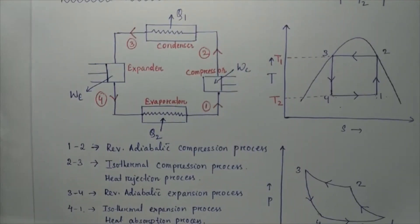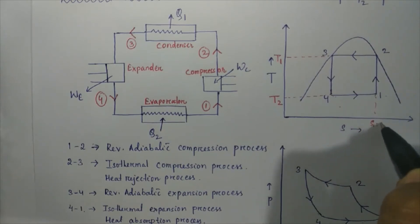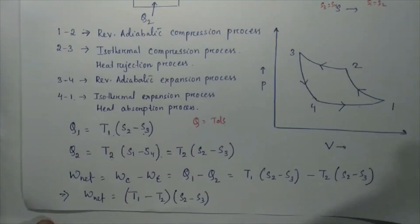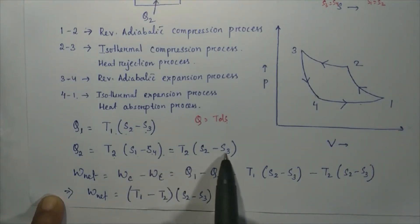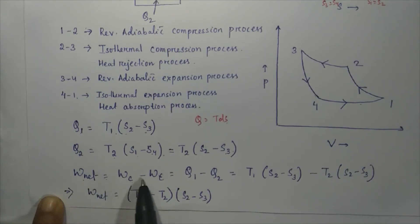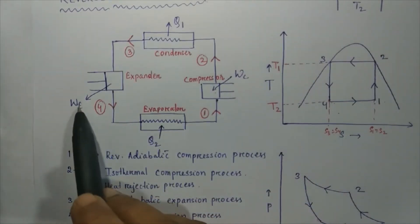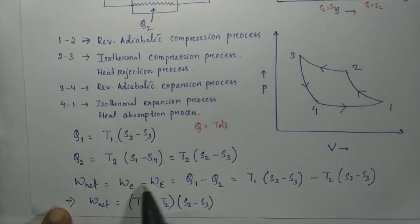Similarly, Q2 = T2 × (S1 − S4). Since processes 1 to 2 and 3 to 4 are reversible adiabatic, entropy is constant, so S1 = S2 and S3 = S4. Substituting, Q2 = T2 × (S2 − S3). The net work W_net = W_compressor minus W_expander. It is important to note that since the reverse heat engine is a work-absorbing device, W_compressor is positive and W_expander is negative.